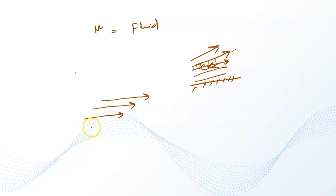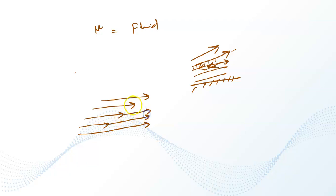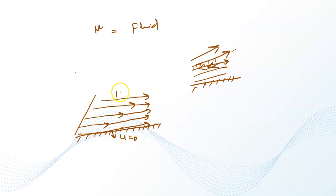As a result, we get a gradient: the upper layers move faster and the lower layers move slower. The layer next to the stationary ground is assumed to have a velocity of zero. There will be a velocity gradient — layer one has the highest velocity, decreasing through layers two, three, four, and five. This is known as the velocity profile.